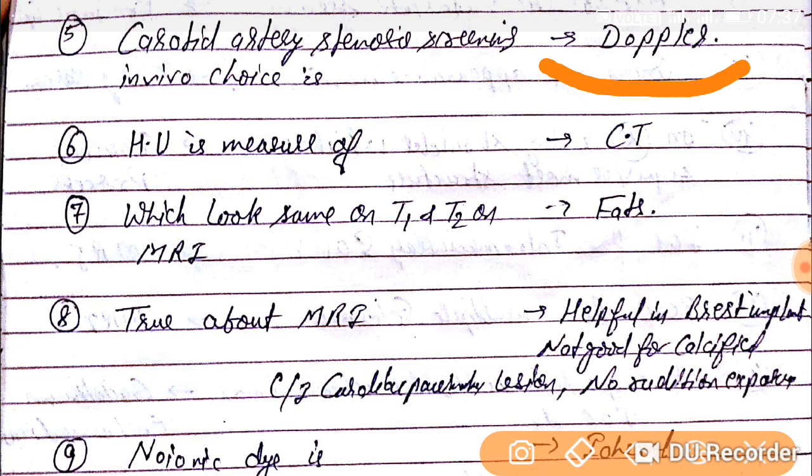Question number sixth. Hounsfield unit is a measure used in CT, while Tesla is the measure used for MRI.